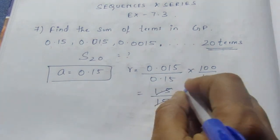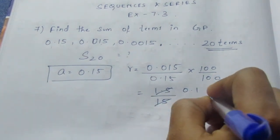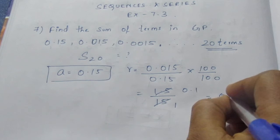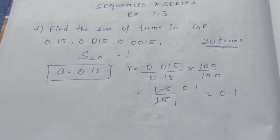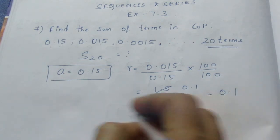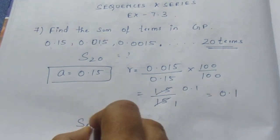15 once, 0.1. So the value here is 0.1. 0.1 is less than 1. As R is less than 1, we need to use this formula.